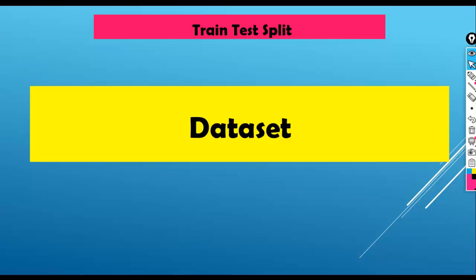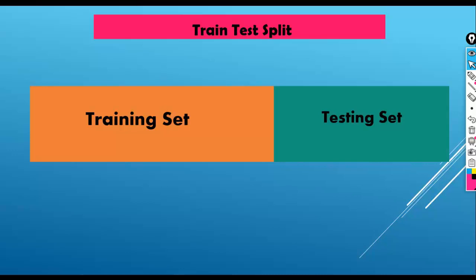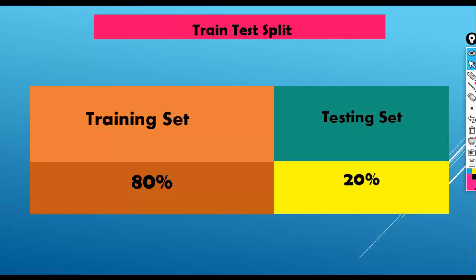In the train-test split, we are dividing our dataset into two subsets: one for training and one for testing. Common split percentages are 80% data for training purpose and 20% data kept aside for testing purpose.